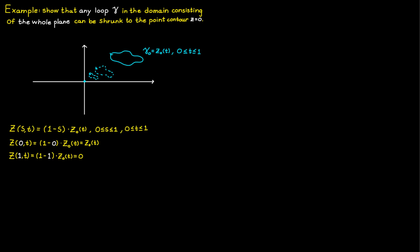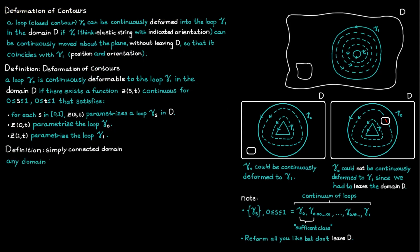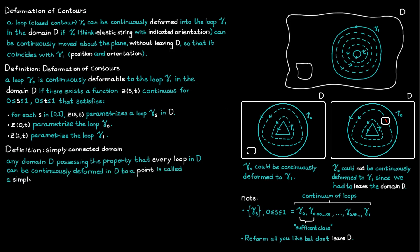There are many different domains that fulfill this property. We say that any domain D possessing the property that every loop can be continuously deformed to a point is called a simply connected domain. Since we are working with two-dimensional domains, we can simplify this to say that a simply connected domain is a domain without holes, because if you have a loop surrounding a hole, that loop can never be deformed to a single point.